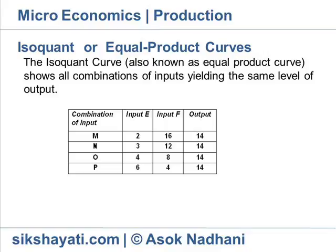so that the same level of production may be maintained. At the equilibrium point, a specific isoquant is tangent to the isoquant line. Usually, isoquants are convex to the origin.